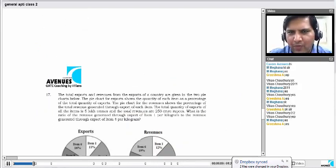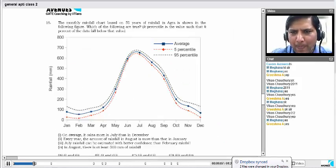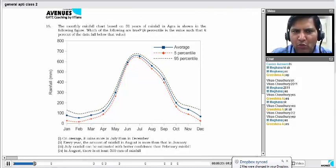I will just make it slightly smaller. The monthly average rainfall chart based on 50 years of rainfall in Agra is shown in the following figure. Which of the following is true? Now what is a percentile? They have explained to us. A percentile is the value below which a percentage of the data falls.